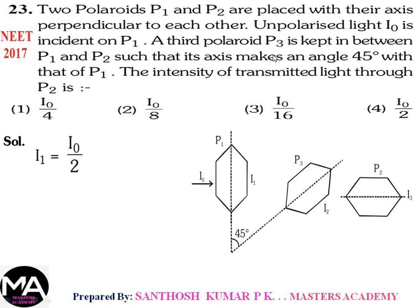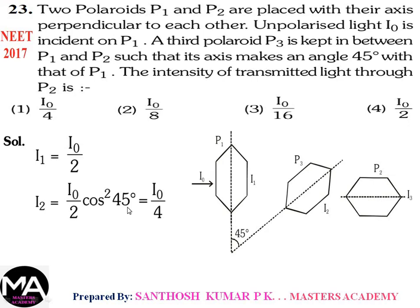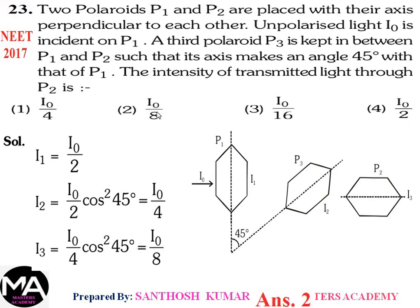Using Malus's law I = I0 cos²θ: intensity after P3 is I2 = I1 × cos²45° = (I0/2) × (1/2) = I0/4. Then the angle between P3 and P2 is also 45°, so intensity after P2 is I3 = I2 × cos²45° = (I0/4) × (1/2) = I0/8. Therefore option 2: I0/8.